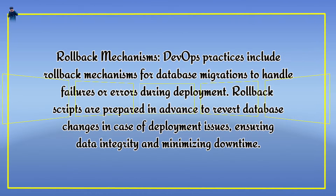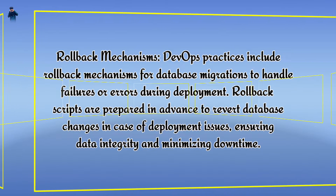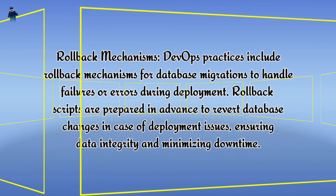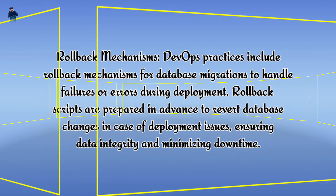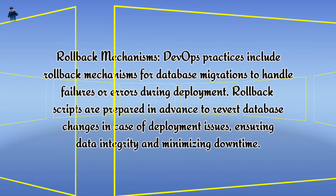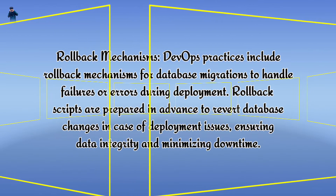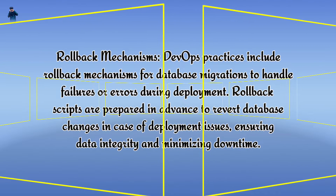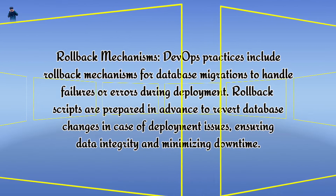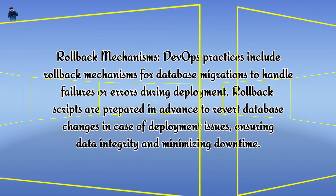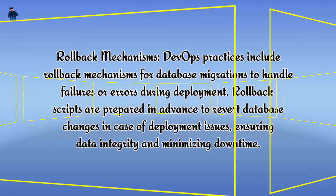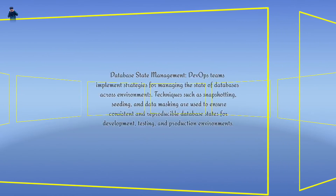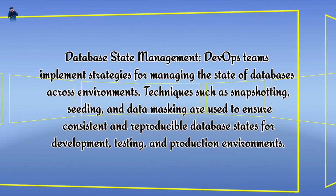DevOps practices include rollback mechanisms for database migrations to handle failures or errors during deployment. Rollback scripts are prepared in advance to revert database changes in case of deployment issues, ensuring data integrity and minimizing downtime. 6. Database state management.